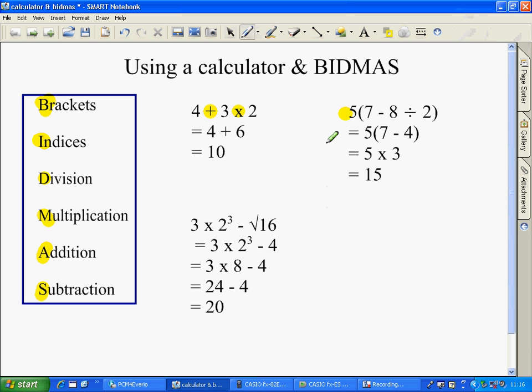This next one here, again, looking at the order of BIDMAS. Brackets first, so we ignore the fact it's 5 times whatever's in the brackets and do the brackets first. Now, within the brackets, we again follow the order of BIDMAS. We have a divide and a minus, we do the divide before we do the subtraction.